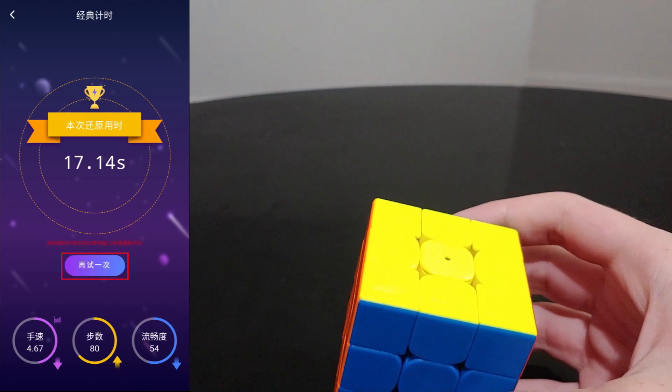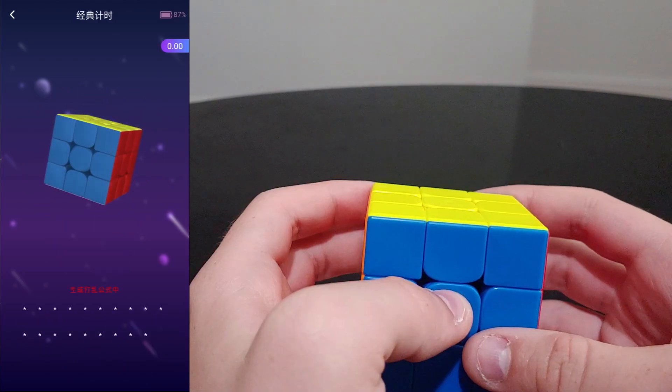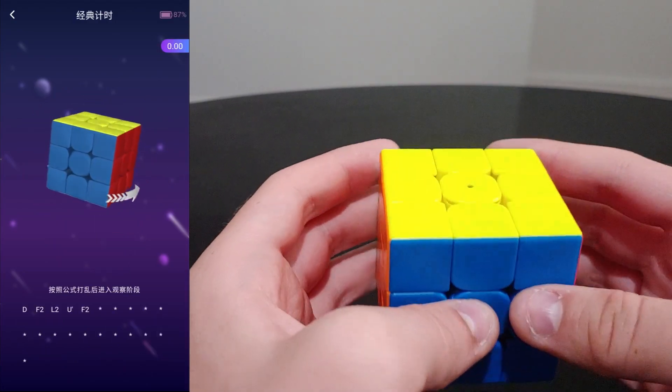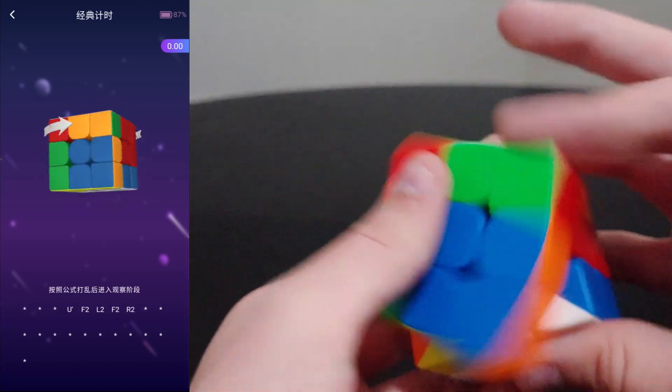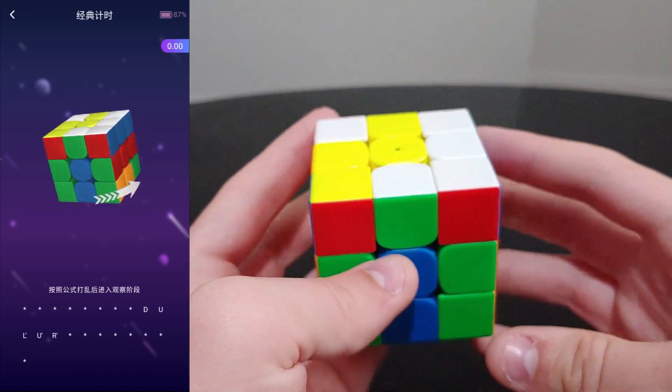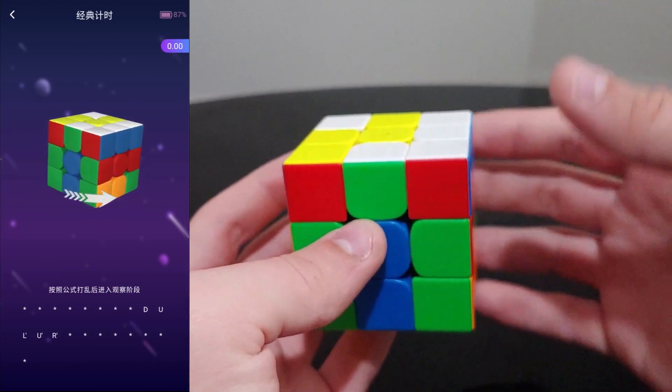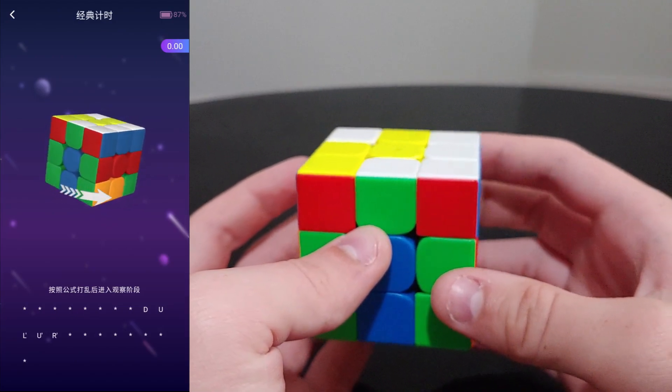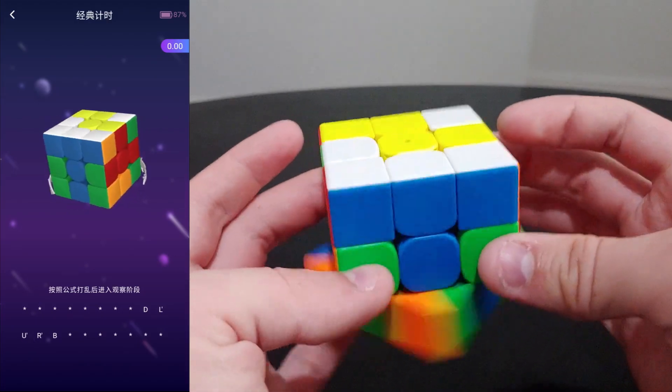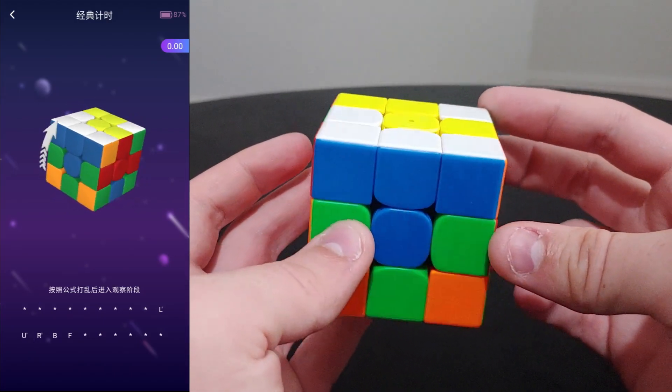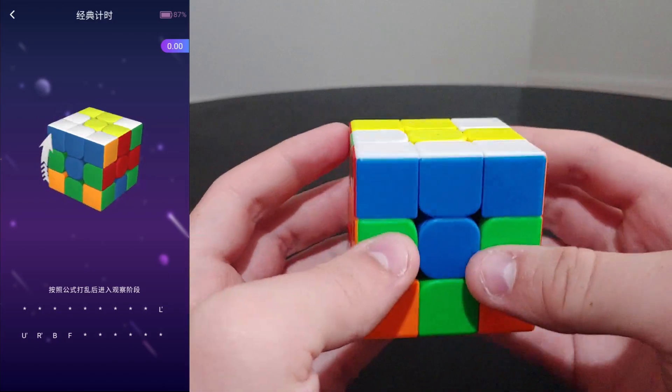And I'm going to do one more solve. And here's something I really like about the Moyu app over other programs. So as you can see, there's a DU in the scramble, and if you do UD, it still works. Most other programs would make you undo those moves and redo them.